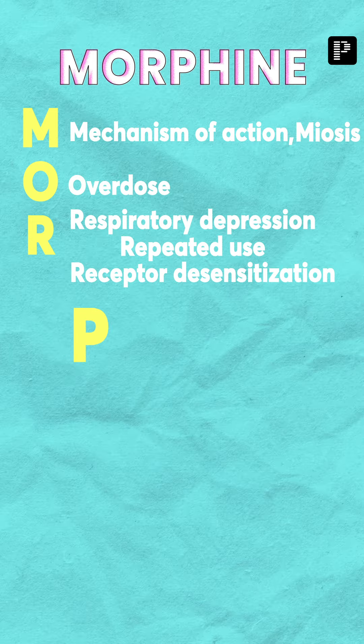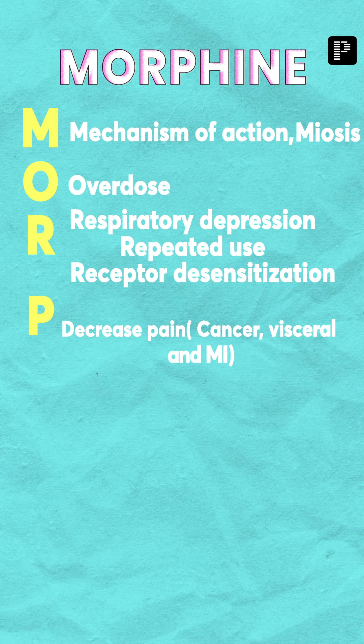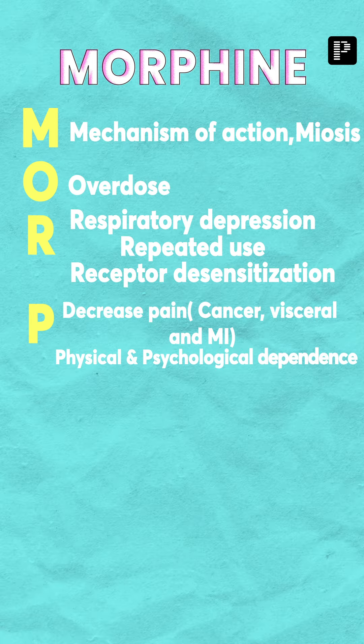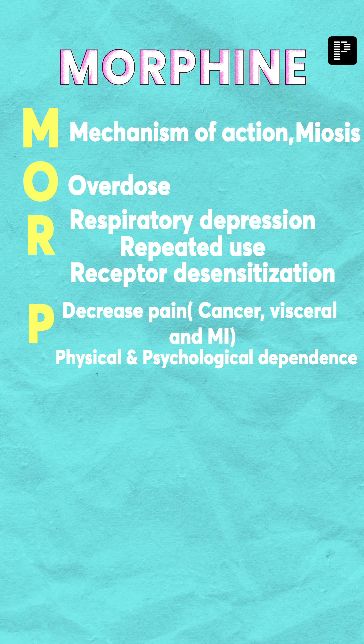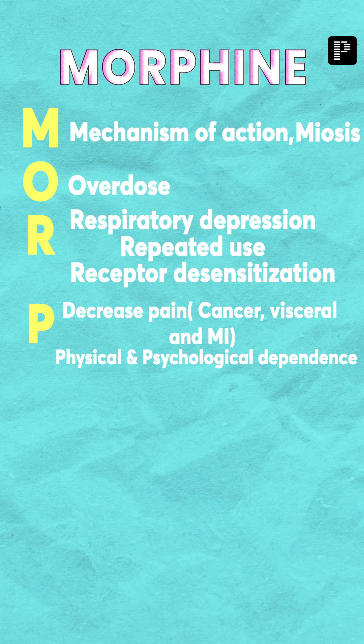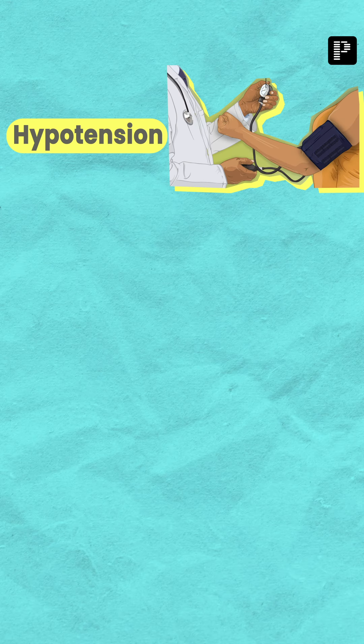The next letter is P — the drug can decrease pain, which we call analgesia. The types of pain it can decrease include cancer pain, visceral pain, and also pain during MI. The next important aspect of P is physical and psychological dependence — so the drug can produce dependence. The next letter is H — the drug will produce hypotension, hypothermia, and hyperreflexia at overdose.